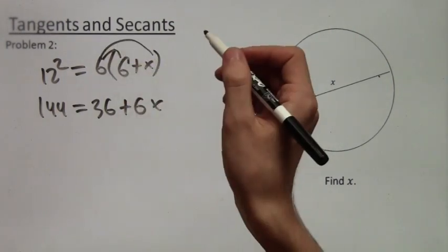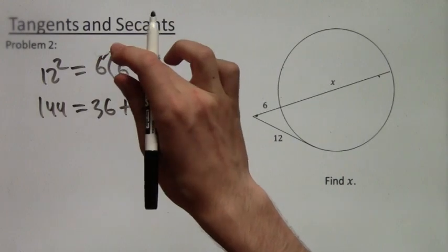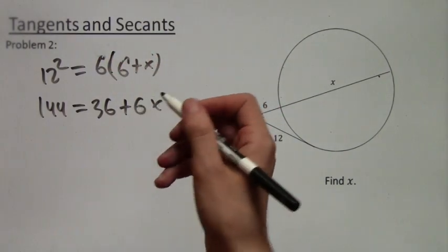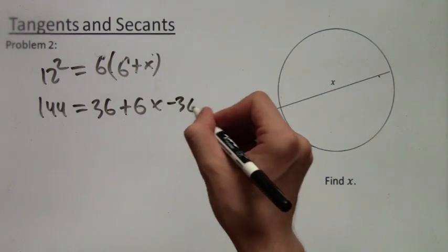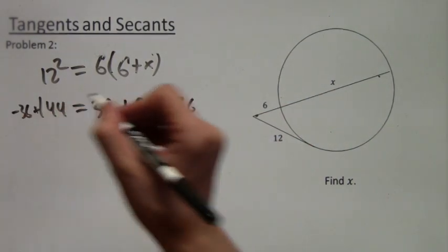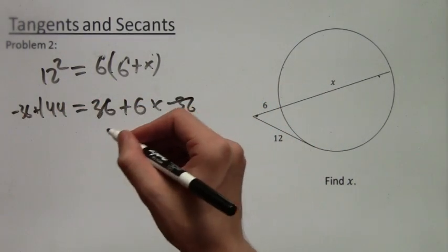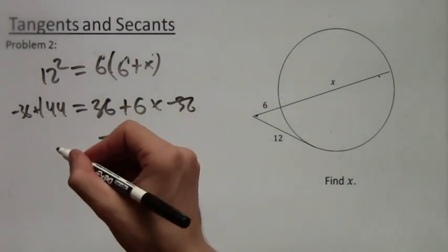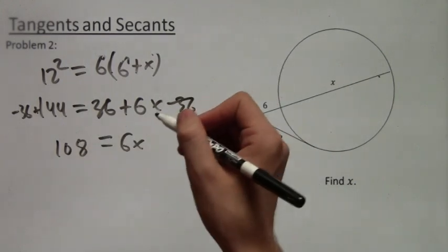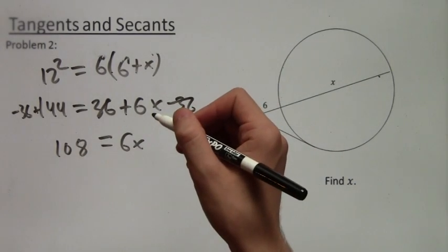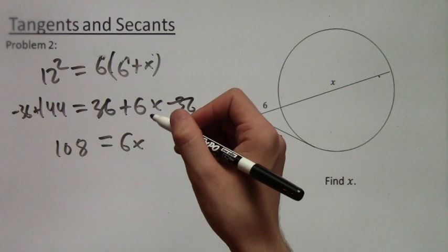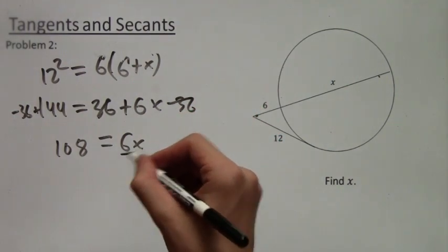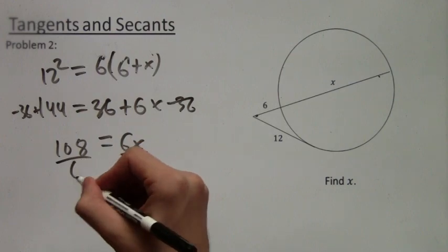And we just got to solve for x from here. So we start by subtracting by 36 on both sides. And that simplifies down to 108 equals 6x. Alright, so 108 equals 6x to solve for x.